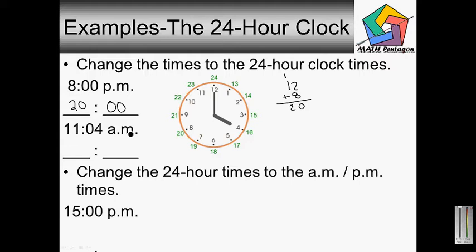For 11:04 a.m., we don't add anything to the morning times. So that's the rule. We don't add anything to the morning times in order to get the military time. So we just leave 11:04 a.m. to just 11:04 in military time. So it's the same thing.